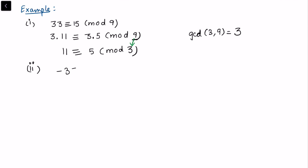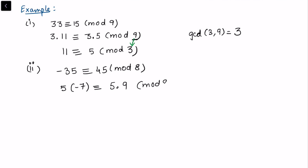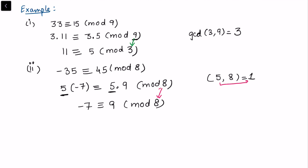In the second example: minus 35 is congruent to 45 modulo 8. We write this as 5 times (minus 7) congruent to 5 times 9 modulo 8. The common term 5 we wish to cancel, and we notice that gcd(5, 8) = 1, so they are relatively prime. This gives minus 7 is congruent to 9 modulo 8, and the modulus remains 8 since we divided by gcd = 1.